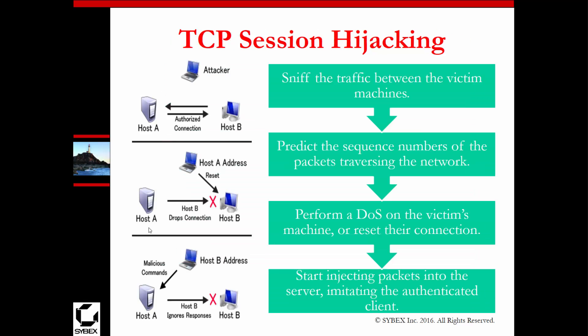For TCP session hijacking specifically: you can sniff traffic between the victim and server, then predict sequence numbers so you can inject packets traversing the network with the appropriate information. Or you can perform a DDoS attack on the victim to reset their connection, then start injecting packets into the server, initiating as the authenticated client. So the sequence is: sniff the network, capture sequence numbers, shut down one of the hosts via DDoS, then take over that session pretending to be the recently shut-down host.